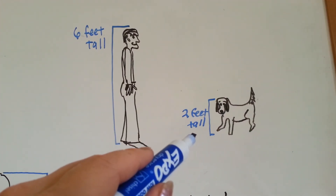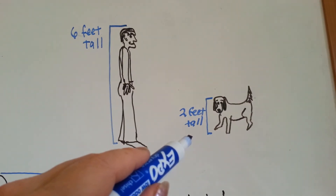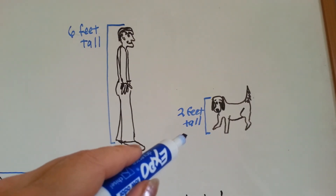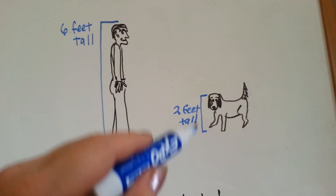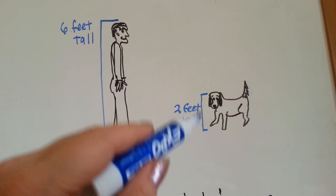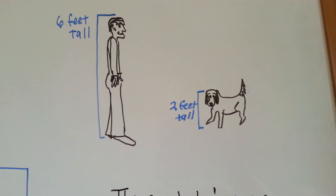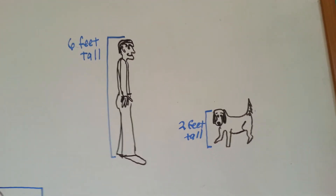If you wanted to measure your dog — if you have a big dog — you could measure it in feet. So a dog could be like two feet tall.